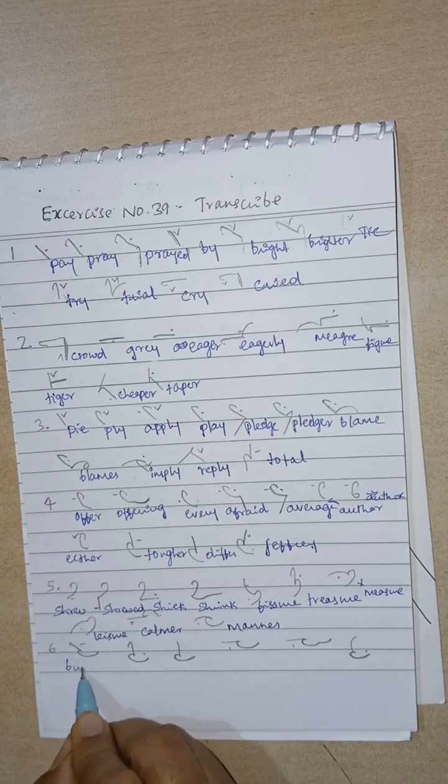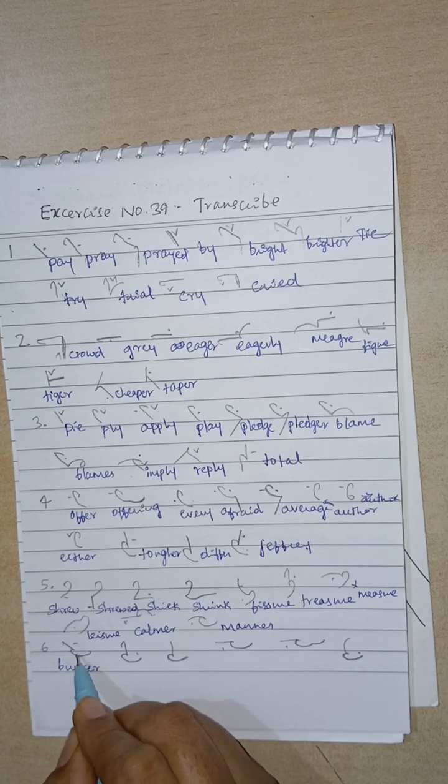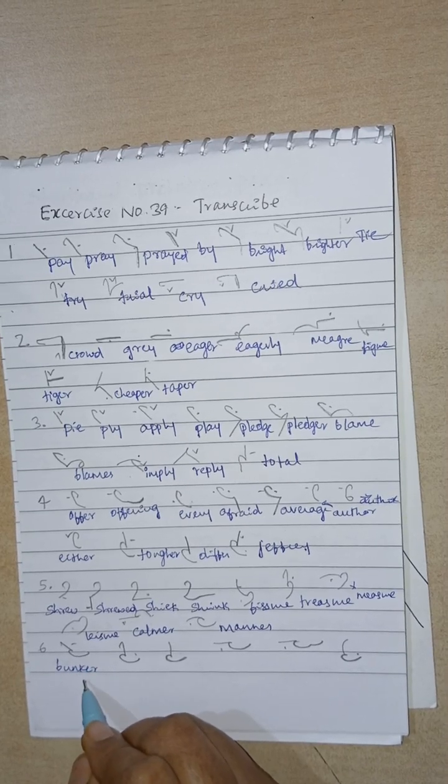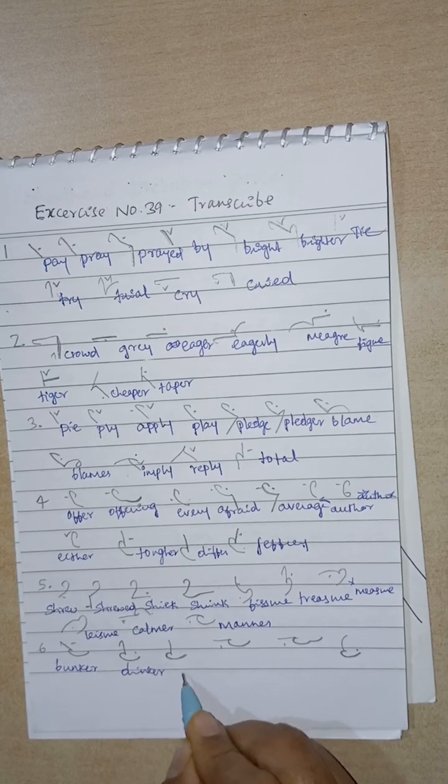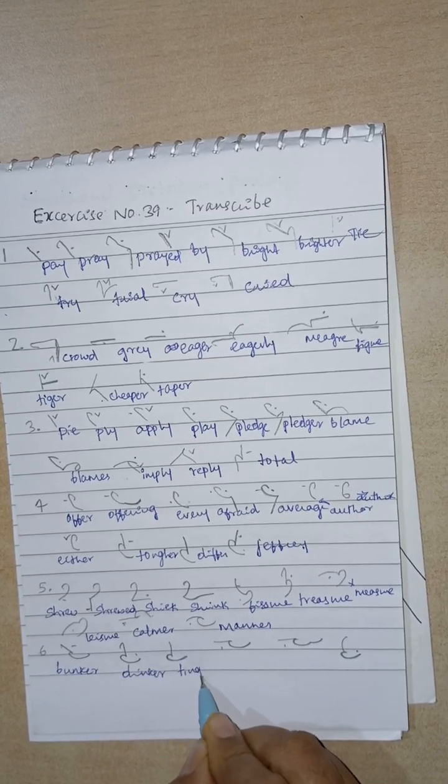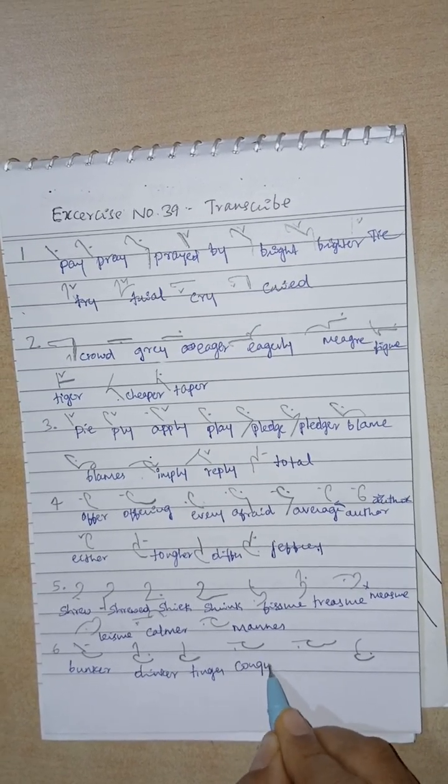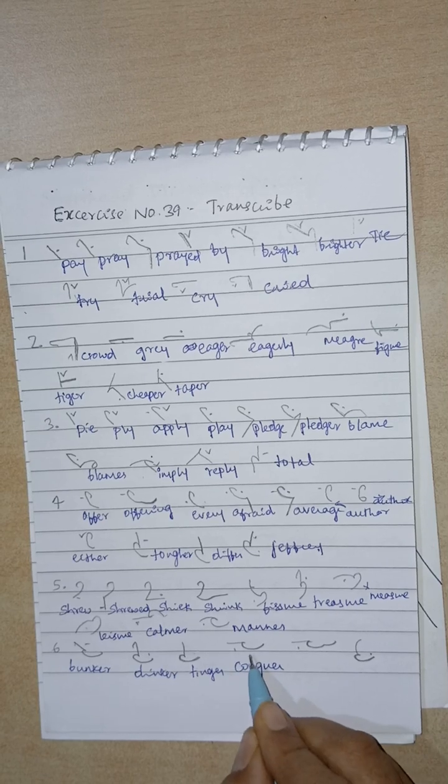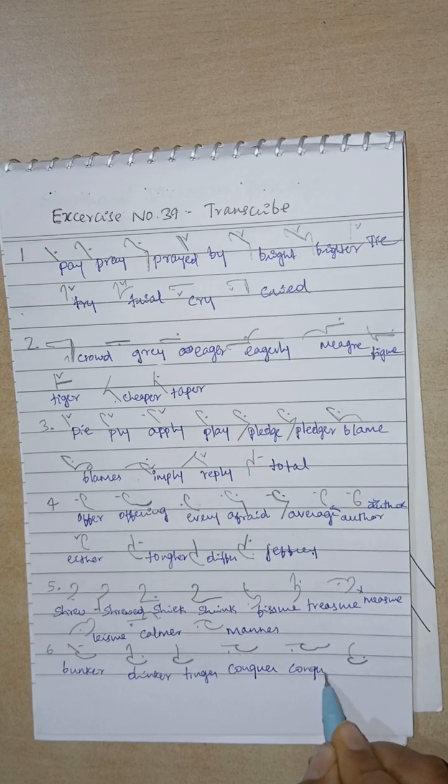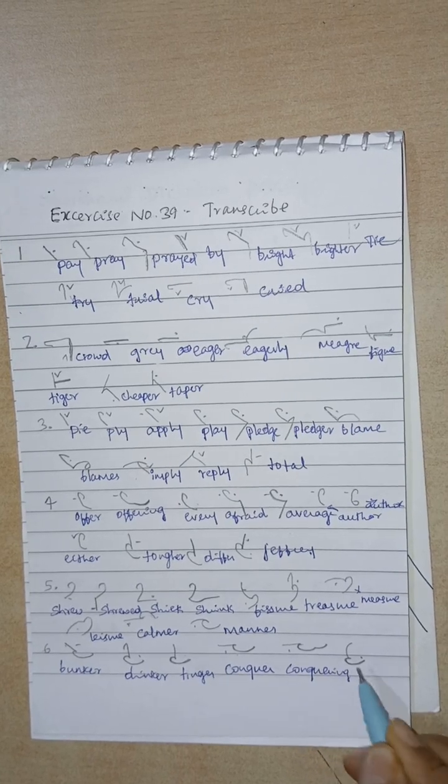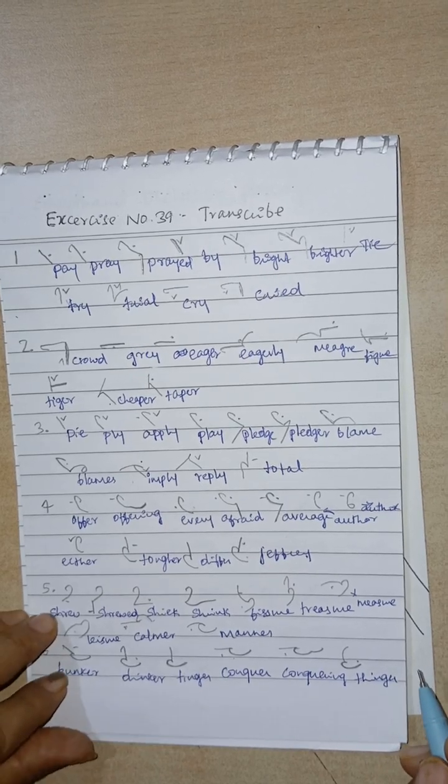Then, Bunker. N-K-E-R sound. Hook. If we attach hook to the ink, then it becomes either N-K-E-R or N-G-E-R. Drinker. Then, Drinker. Tinger. Here, N-G-E-R sound. Then, Conker. N-K-E-R sound. Conkerring. Then, Tinger. It-I-N-G-E-R.